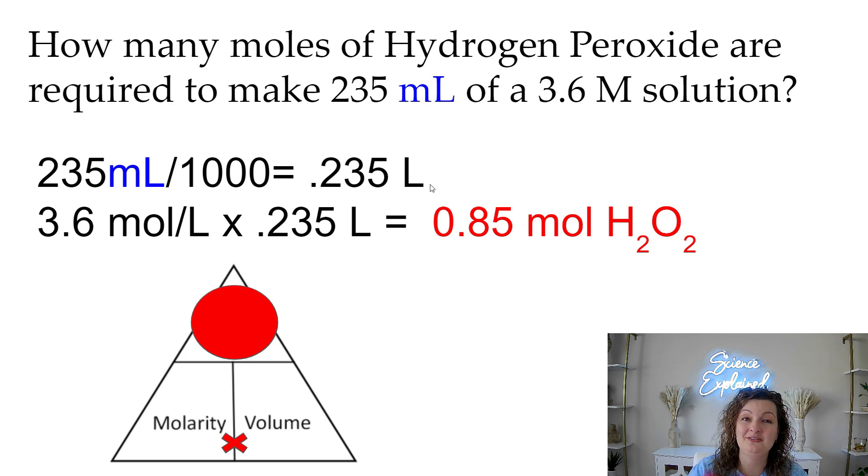Now I can go to my triangle and finish my problem. So I'm going to multiply my liters by my 3.6 molar solution, and I end up getting 0.85 moles of hydrogen peroxide.